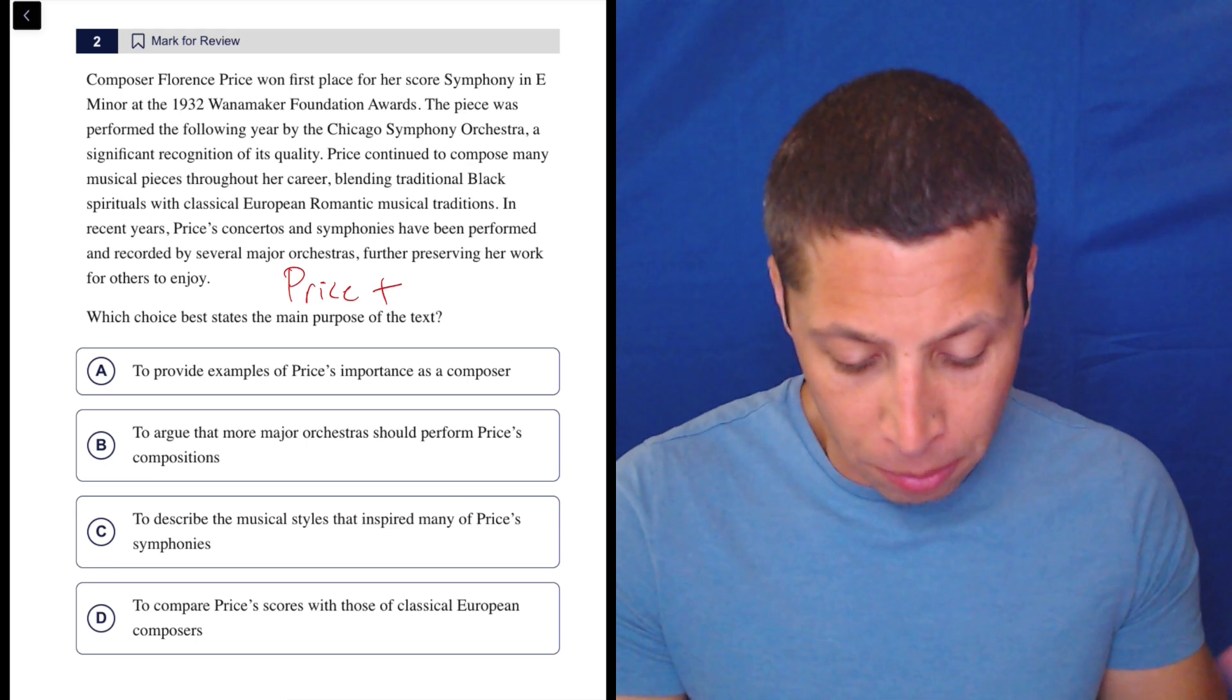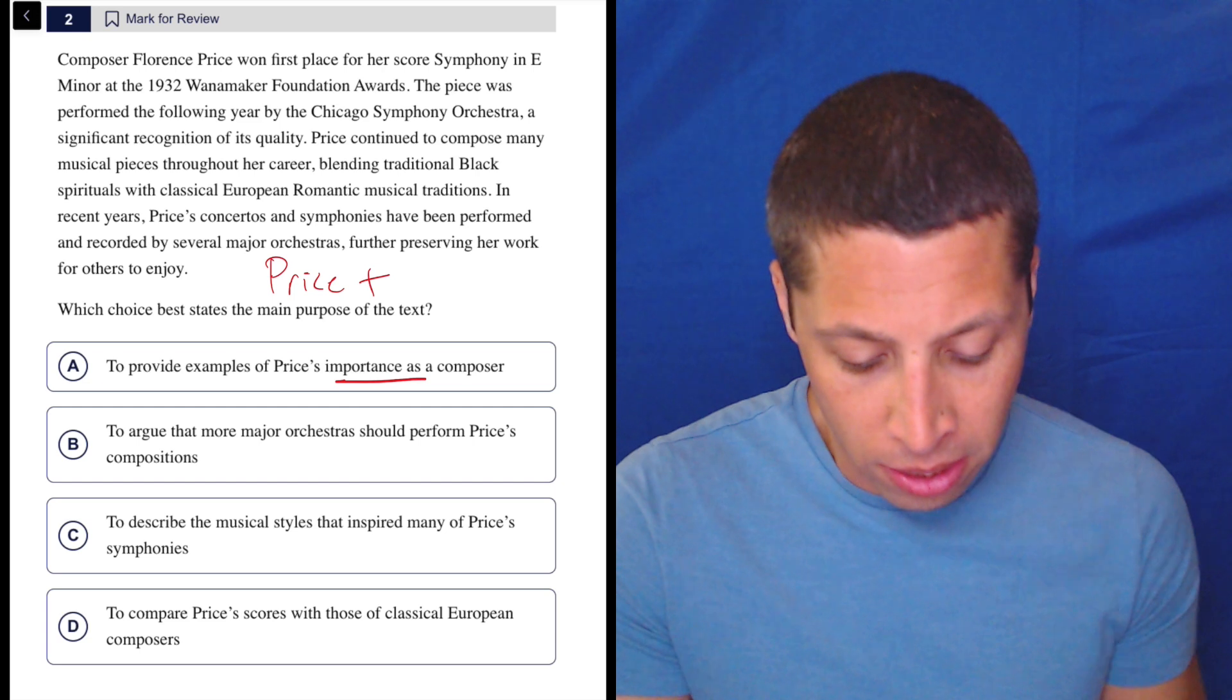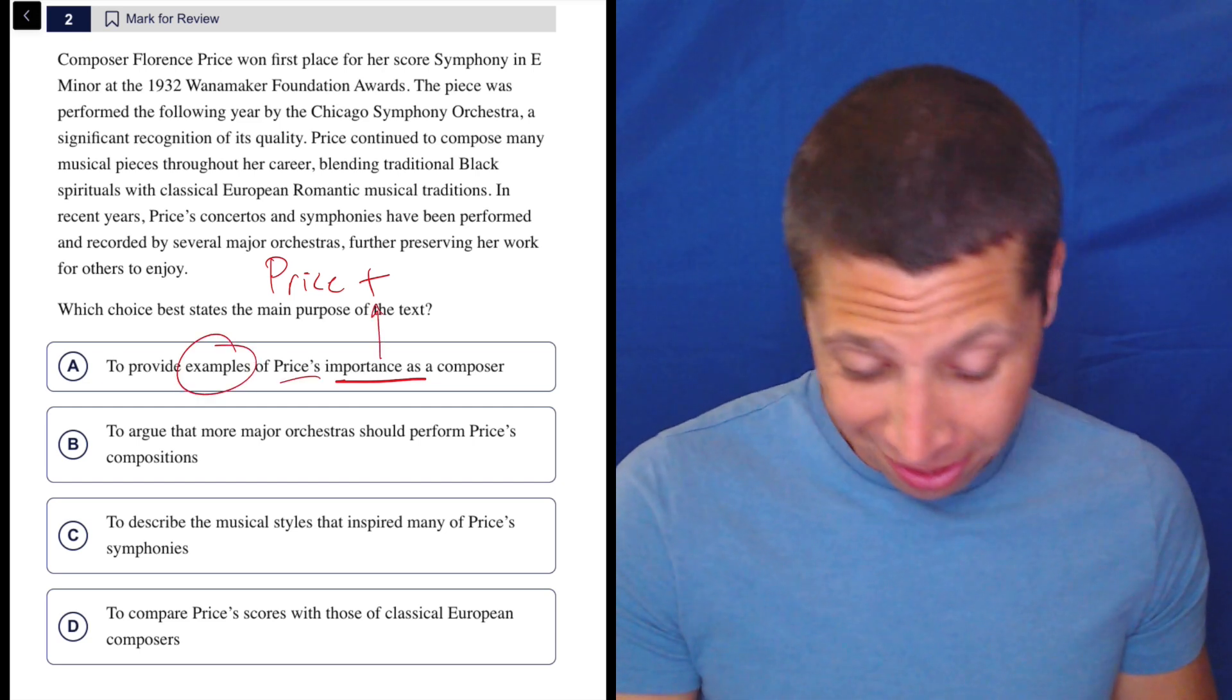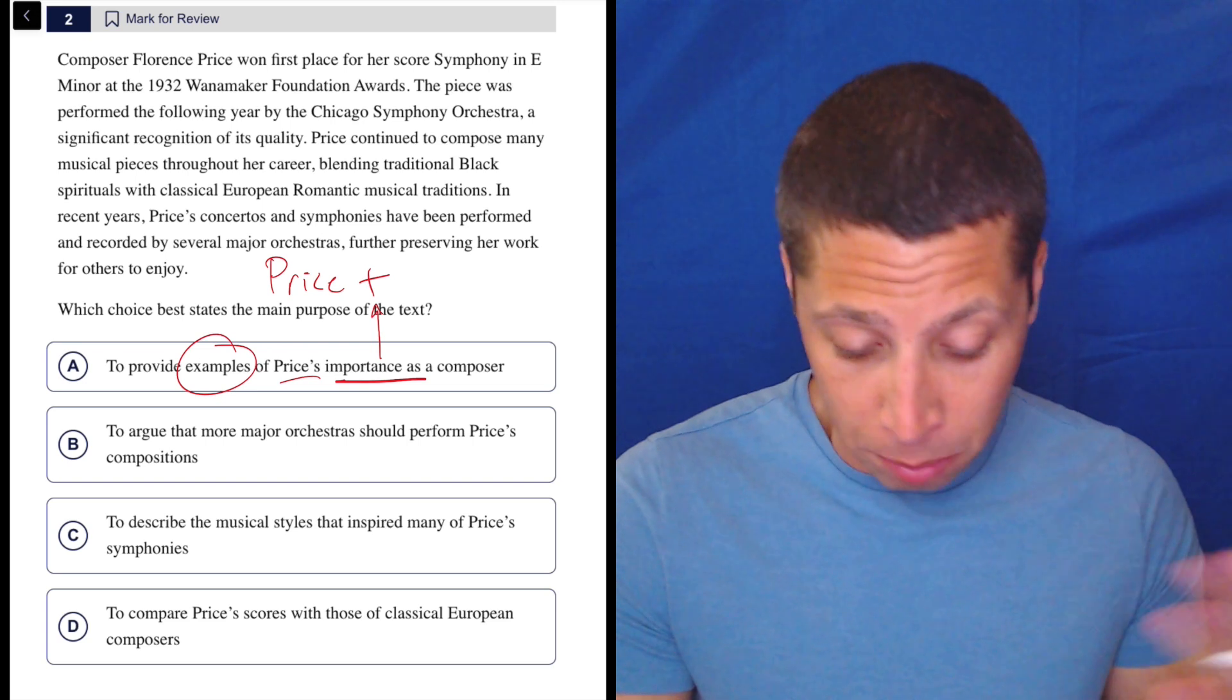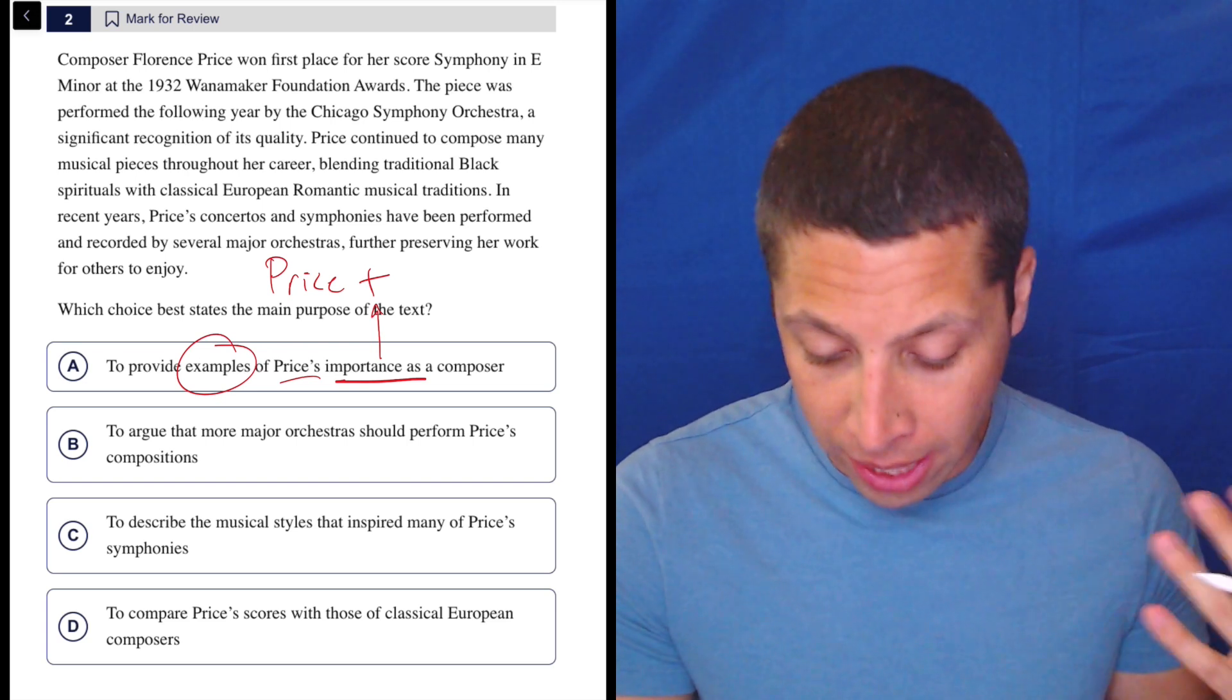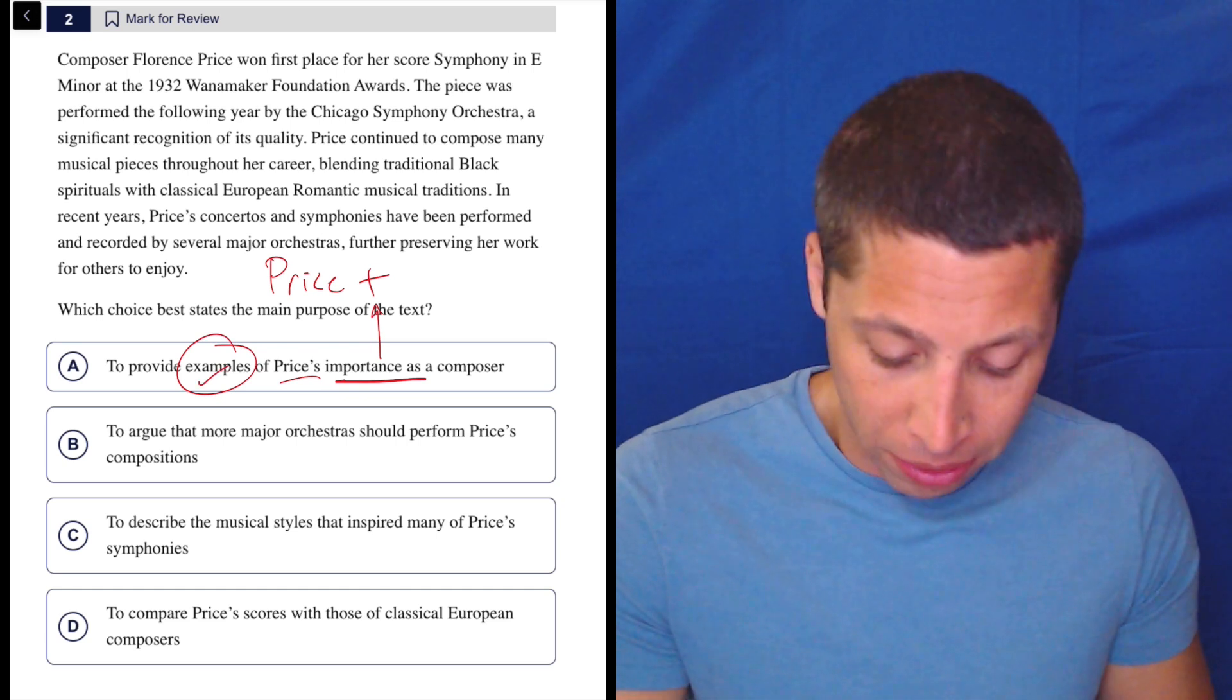So what is the purpose of the text? A, to provide examples of Price's importance as a composer. Well, importance seems like a positive, and it's about her. So are there examples? Maybe that's the only thing I would ask. I mean, I guess they do give one, right? The specifics about the 1932 Wanamaker Foundation Awards, right? And then it was used. So that's a specific example. So I don't know. That seems to check off. But let's keep going. Let's take a look at the other choices.